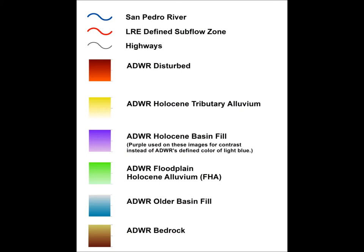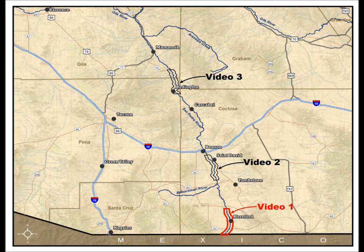To better represent the topography, each color consists of light to dark shades. The channel of the San Pedro River is shown in dark blue. Roads are shown in black. And my 2009 delineation of the subflow zone, without setbacks applied, is shown in red. The black background shows the extent of both the ADWR and AGS mapping. The first animation begins at the Arizona border with Mexico, flies northeast past the Hereford Bridge, and then generally turns north. It is highlighted in red on the map.